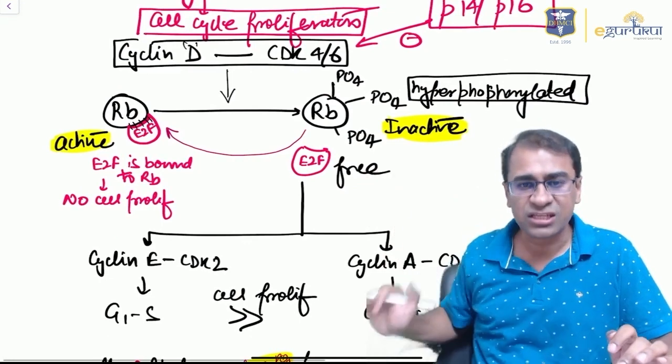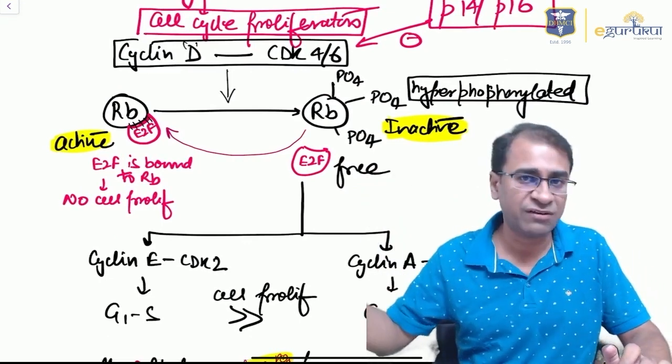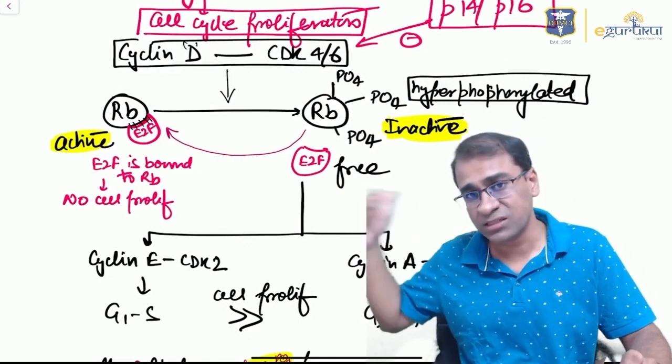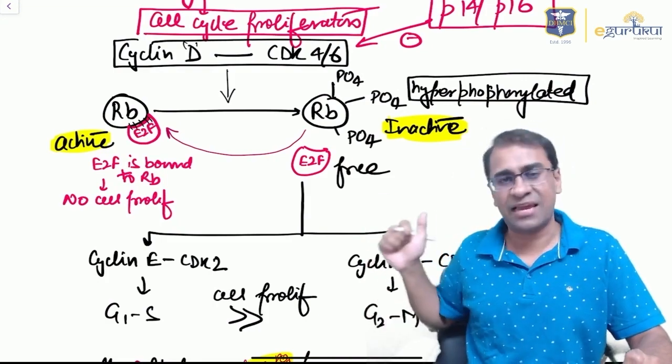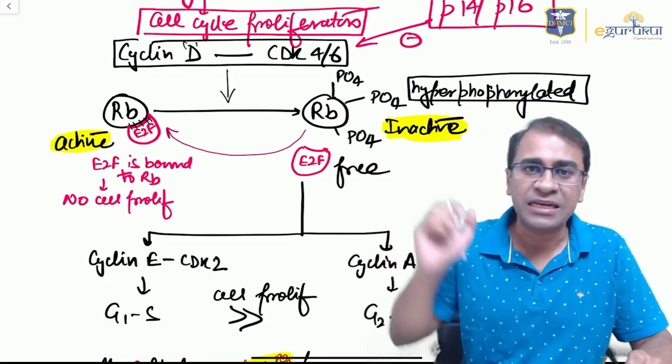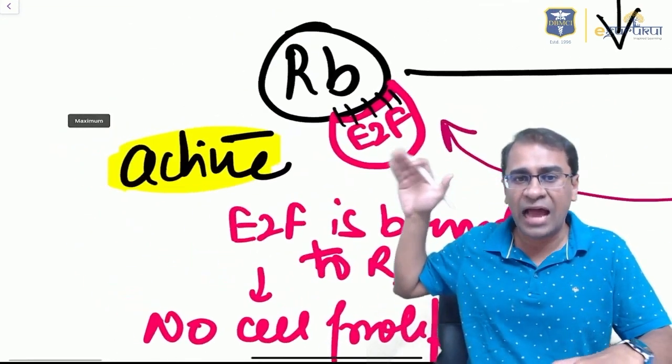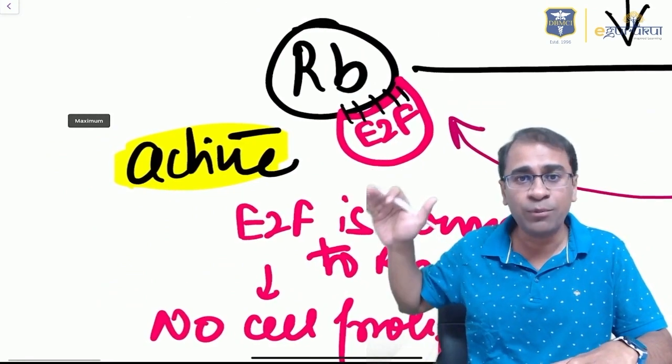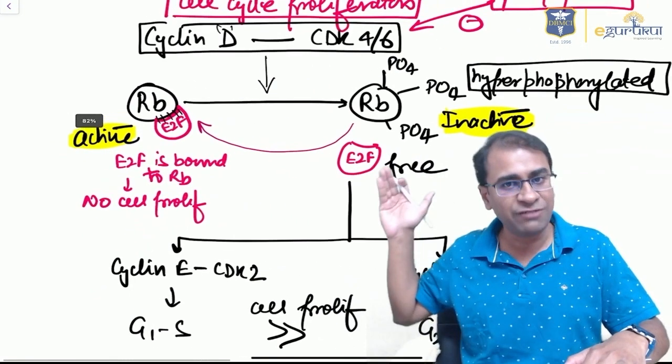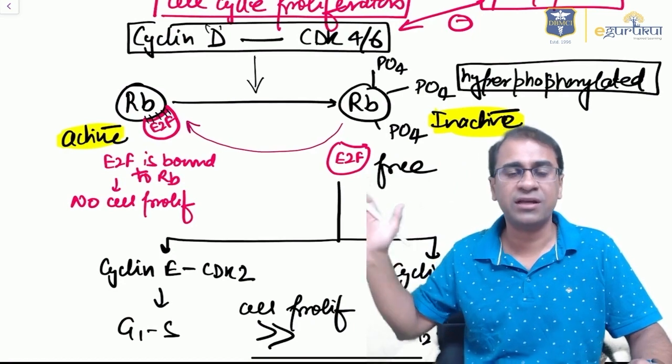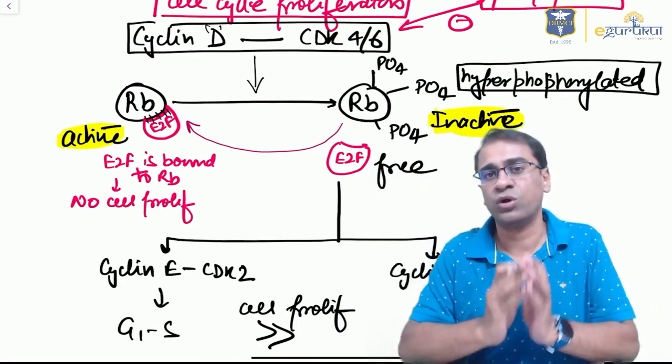The moment E2F becomes free, it starts causing proliferation at both G1-S and G2-M by activating other cyclins like cyclin E and cyclin A. The important point to remember is this change from the active form of RB, which is hypophosphorylated, to the inactive form, which is hyperphosphorylated. The hyperphosphorylated form is what causes proliferation.